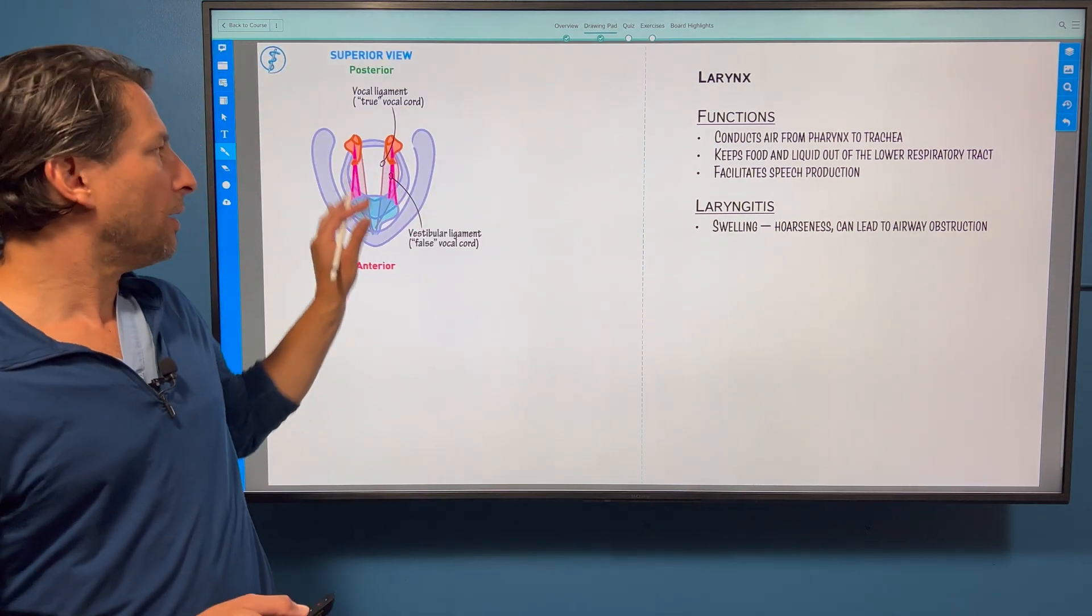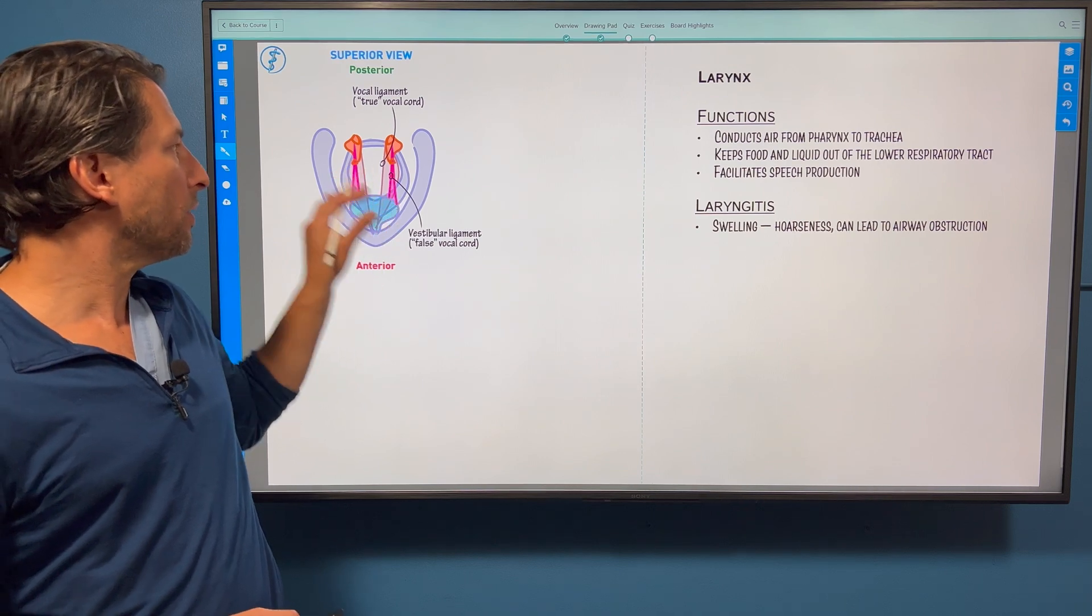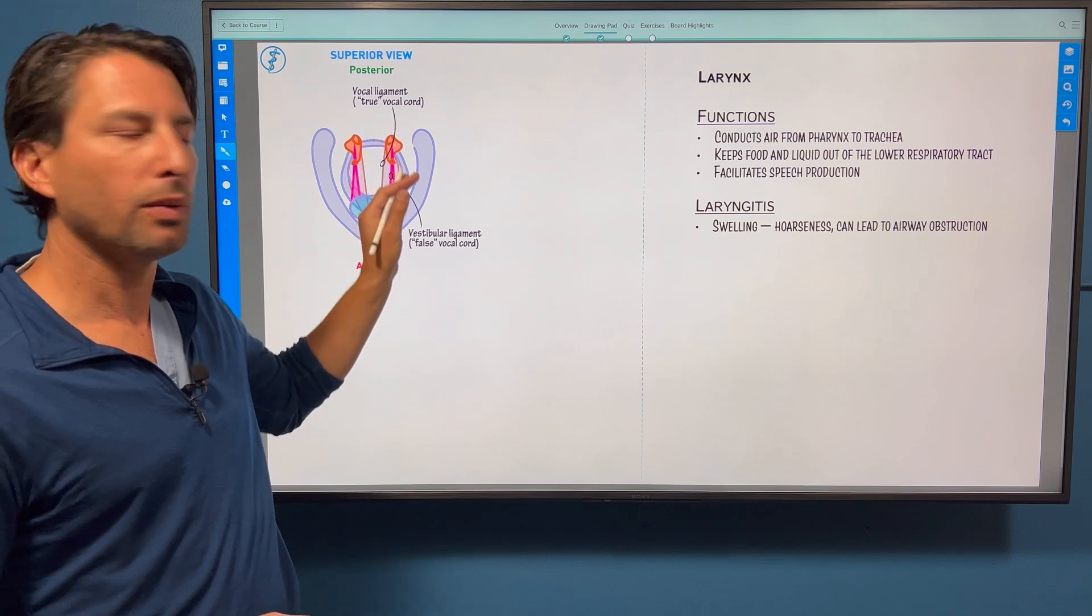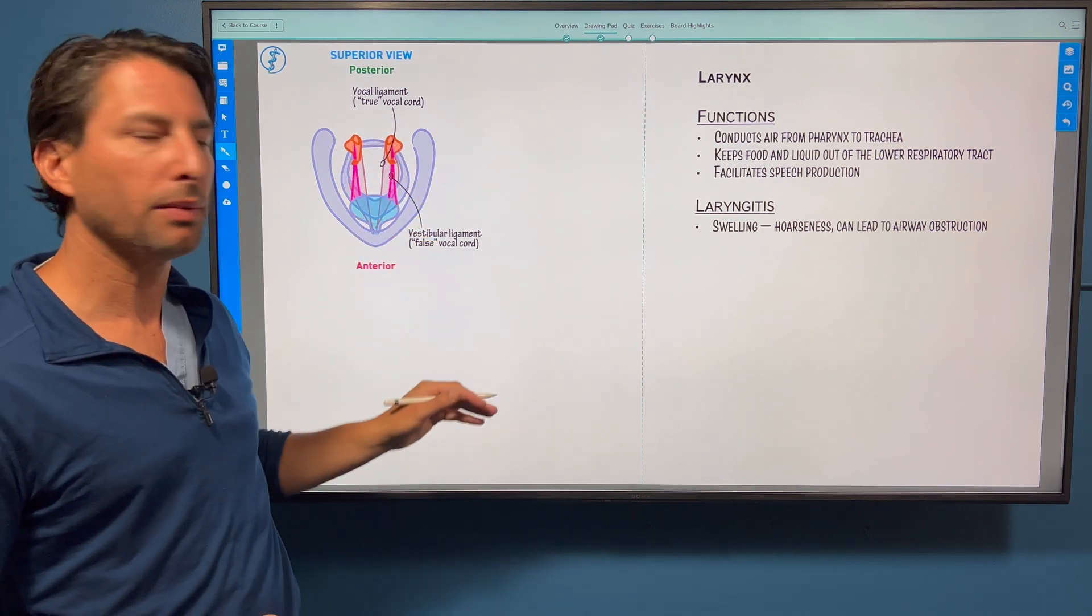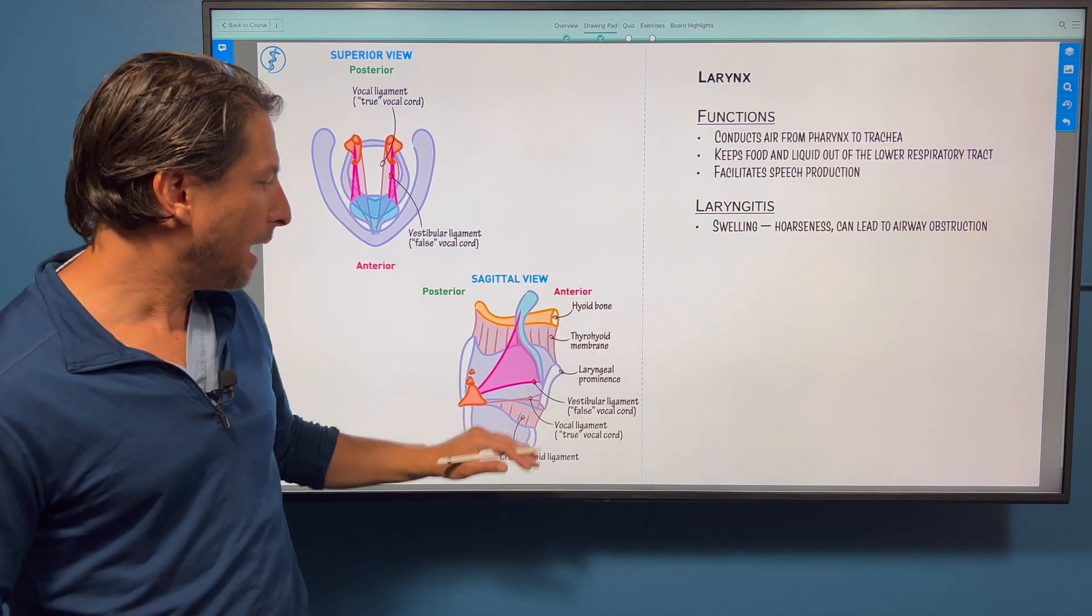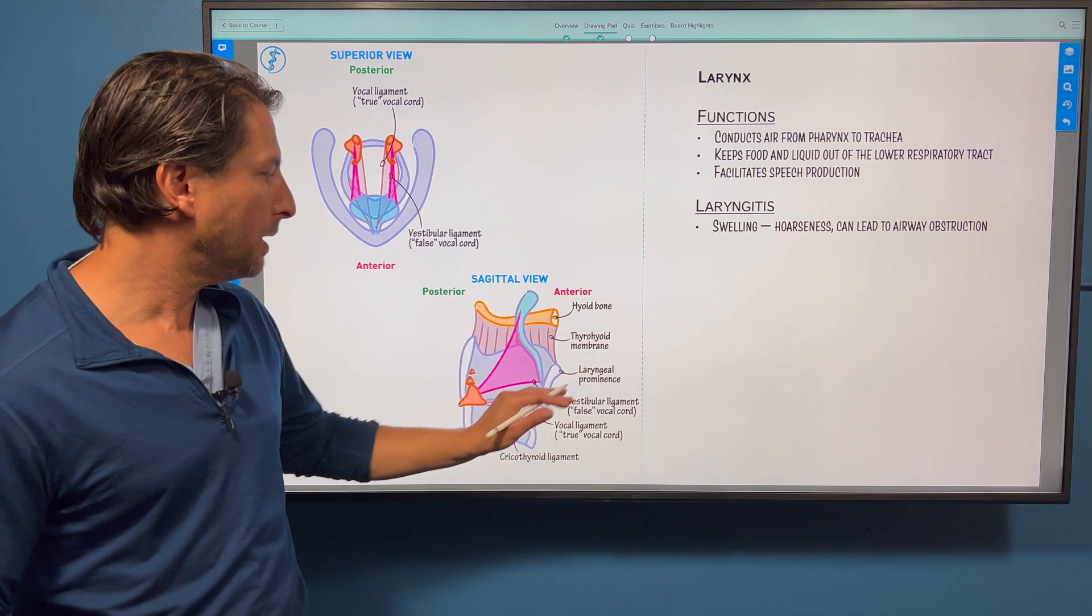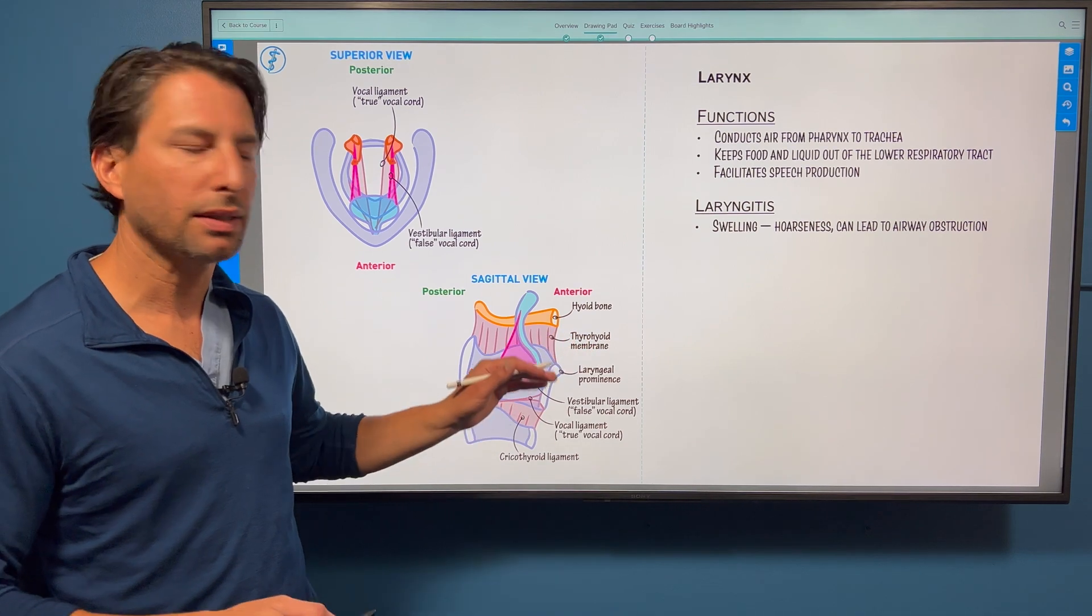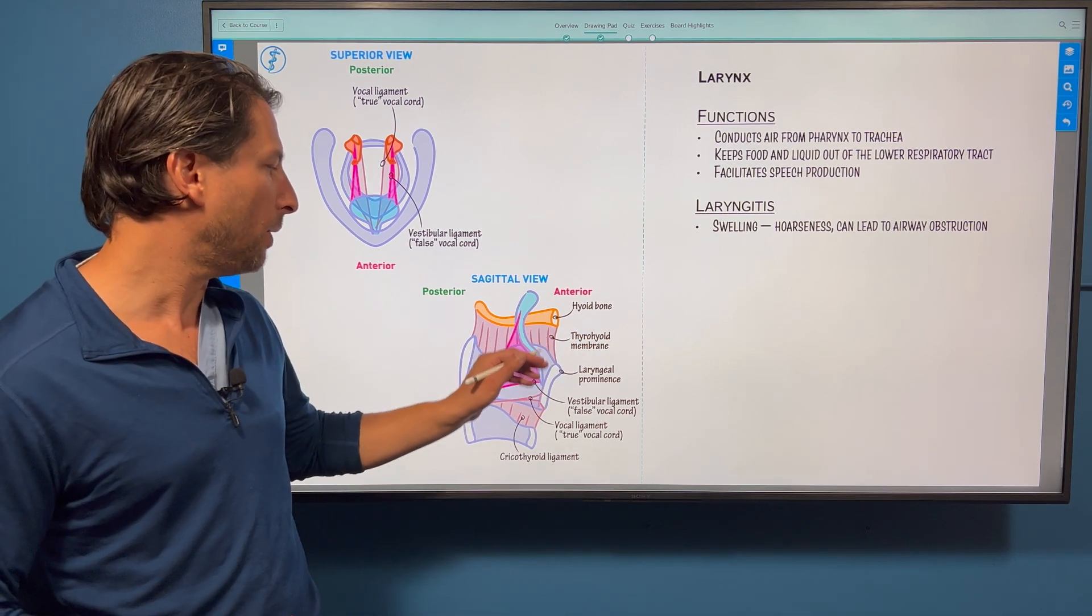Here is our larynx in superior view. Looking down on it here, we've pointed out the vocal ligament, which is the true vocal cord, and then the vestibular ligament, which is the false vocal cord. Here it is in sagittal view with the laryngeal prominence. We talk about thyrohyoid musculature and the muscle anatomy. Here's the thyrohyoid membrane here.